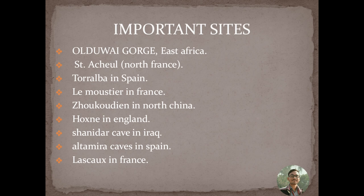Important sites of the Paleolithic age include Olduvai Gorge in East Africa, Saint-Acheul in France (recognized for Acheulian culture), Torralba in Spain, Le Moustier in France, several sites in North China, Hoxne in England, Shanidar Cave in Iraq, Altamira caves in Spain, and Lascaux in France. These sites witnessed great evidence of the evolution of humankind, with many archaeological discoveries including evidence of fire and new tools.